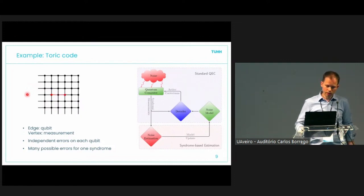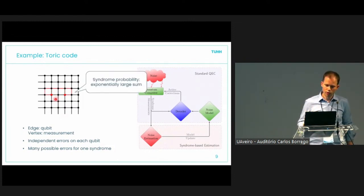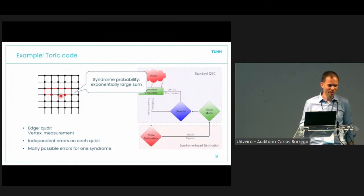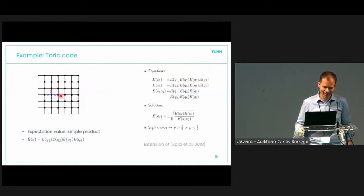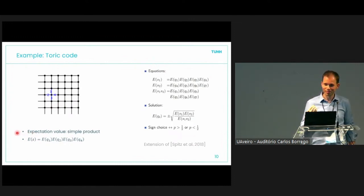The problem is: say we observe a syndrome like this — from this stabilizer and that stabilizer we get a minus one, so we know there is an error. It might be this type of error, like the two red edges, or it might be another one. When you want to calculate the syndrome probability of obtaining the syndrome, you need to evaluate an exponentially large sum, which looks pretty much intractable. But fortunately, it isn't.